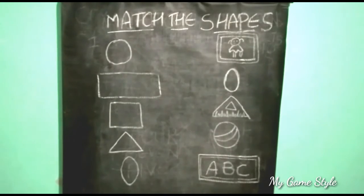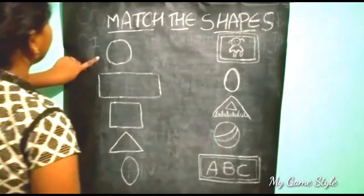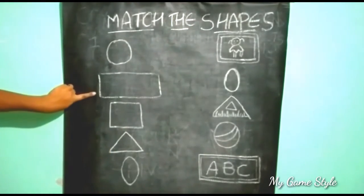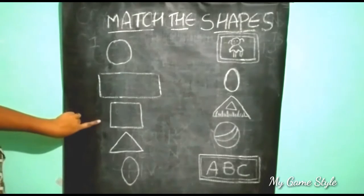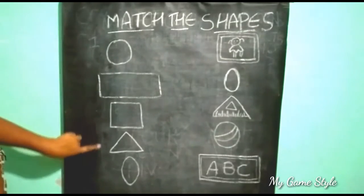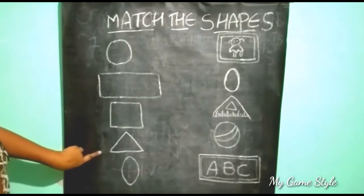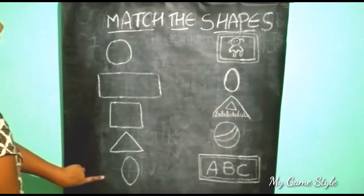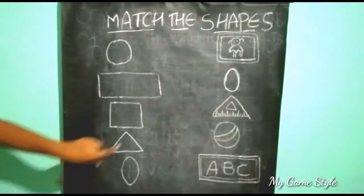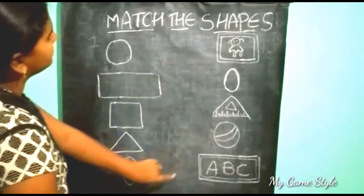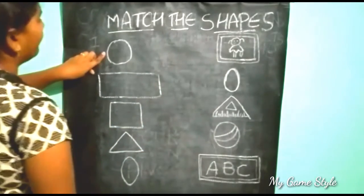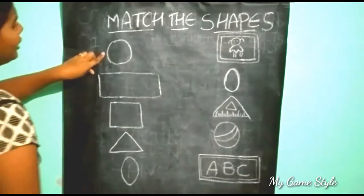Let's start. This is Circle. This is Rectangle. This is Square. This is Triangle. This is Oval. These are the figures. This is Circle — which is similar to Circle?